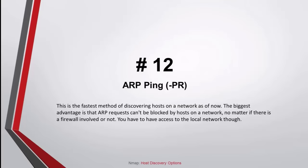Command number 12: ARP ping. This is the fastest method of discovering hosts on a network. The biggest advantage is that ARP requests cannot be blocked by hosts on a network, regardless of whether there is a firewall involved. However, you have to have access to the local network.